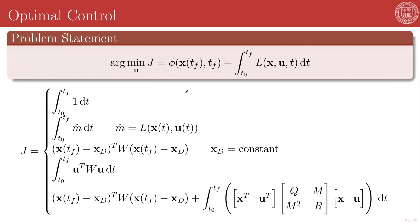Optimal control can be thought of as an extension of non-linear programming, however, with an infinite number of points considered — that is, the continuous integral over whole paths. A formal statement of optimal control is that we wish to find the control input u, which is a function of time, that minimizes a cost function J composed of final state costs encoded via a function phi operating on the state at the final time and the final time, plus the path cost, which is the integral over the entire time span t0 to tf of some function L that is a function of x, u, and t.